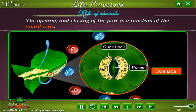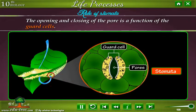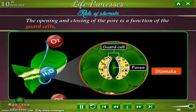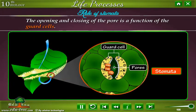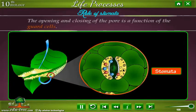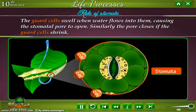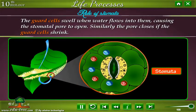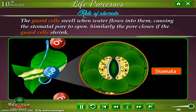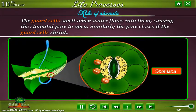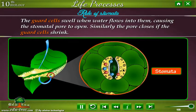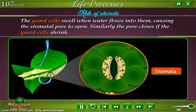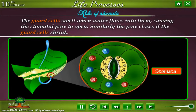The opening and closing of the pore is a function of the guard cells. The guard cells swell when water flows into them, causing the stomatal pore to open. Similarly, the pore closes if the guard cells shrink.